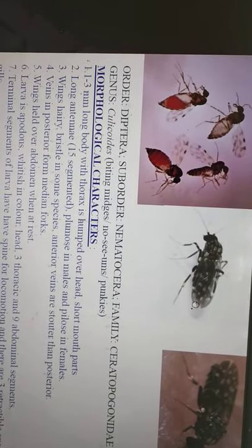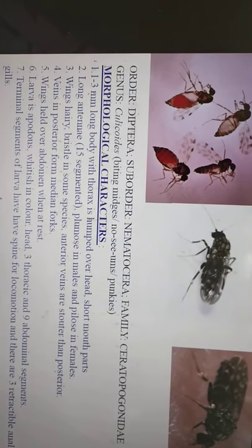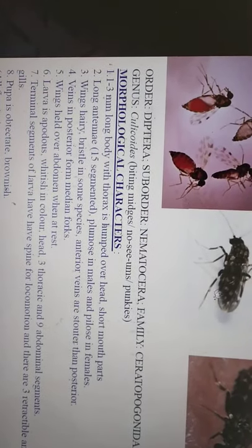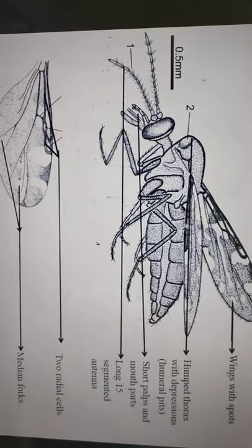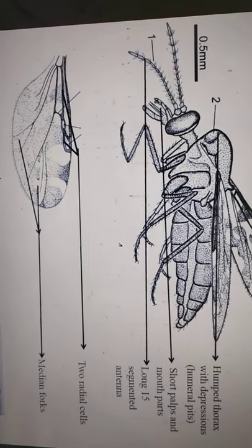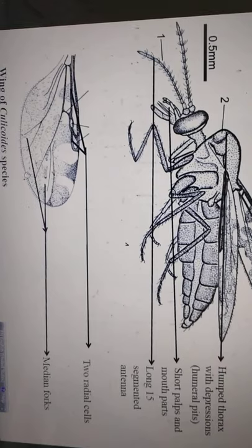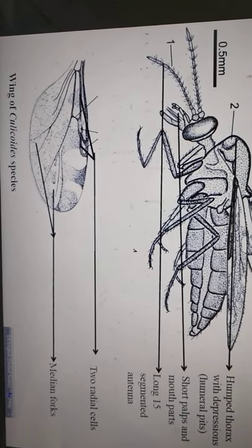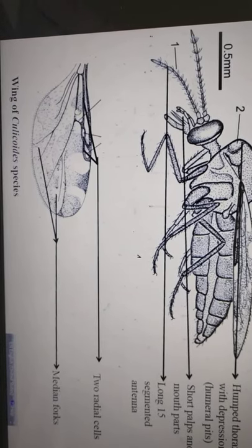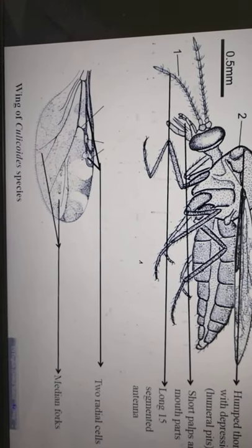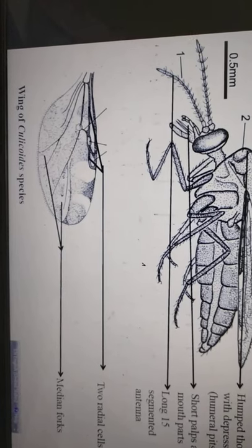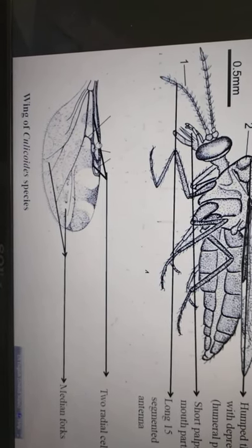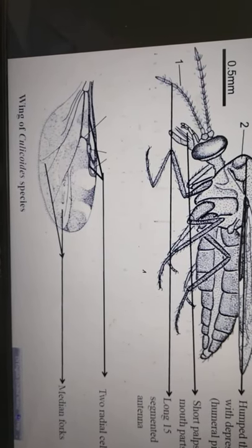When Culicoides sits, the thorax is humped and the wings cross each other like blades of a scissor. Another important thing is wing venation. The anterior part of the wing — the veins close together to form two cells. A cell is a closed structure formed by veins.